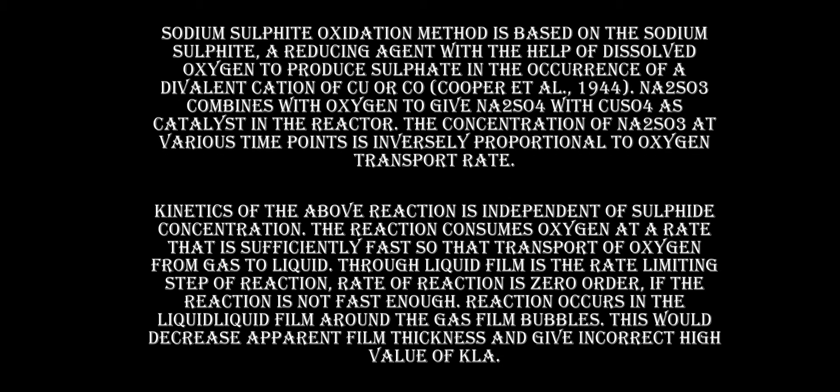The sodium sulphite oxidation method is based on sodium sulphite, a reducing agent, reacting with dissolved oxygen to produce sulphate in the presence of a divalent cation of copper or cobalt. Na₂SO₃ combines with oxygen to give Na₂SO₄, with CuSO₄ as a catalyst in the reactor.